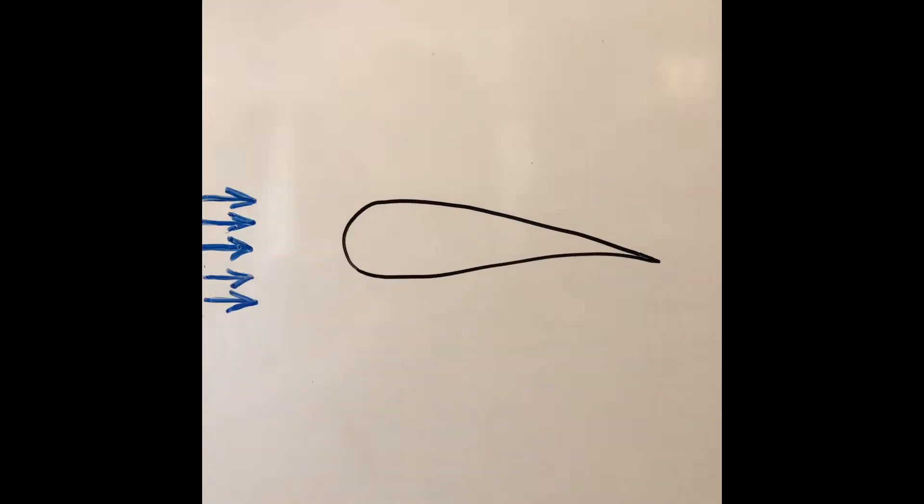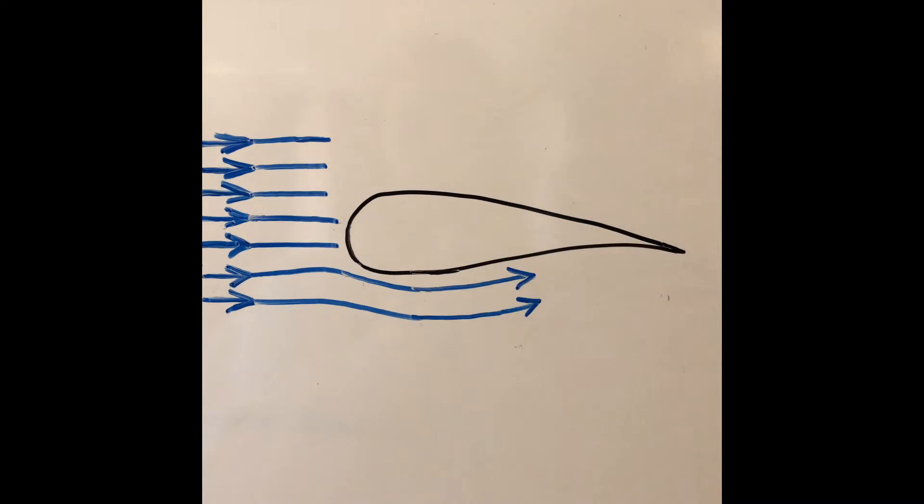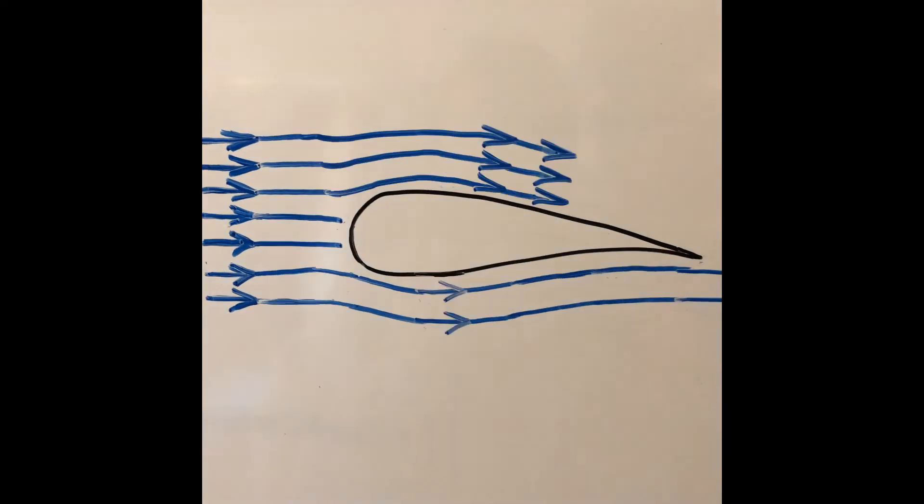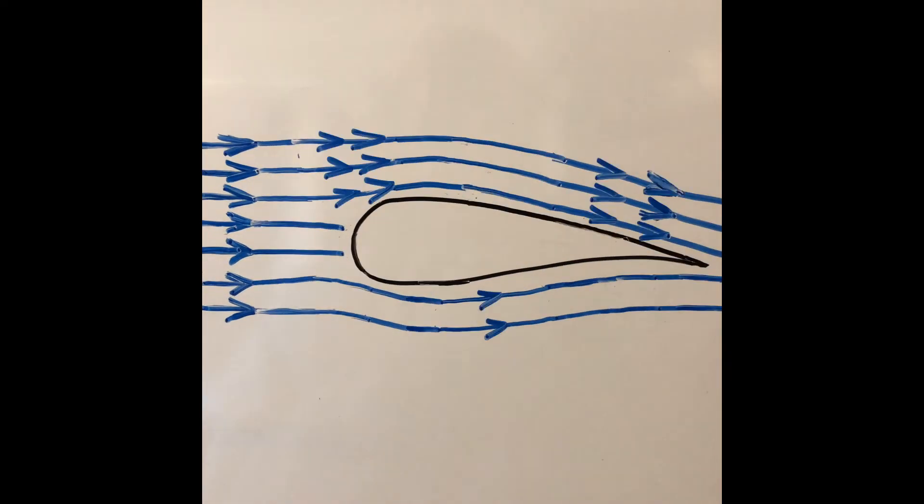You can see the airflow underneath the wing maintains the same speed, whereas the airflow above the wing increases its speed as it travels across a longer distance. This is what creates the area of low pressure above the wing.